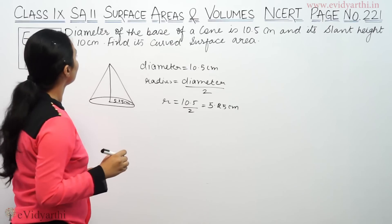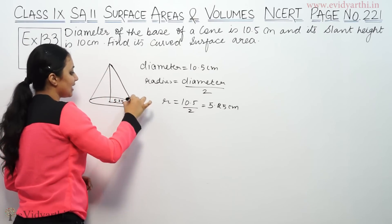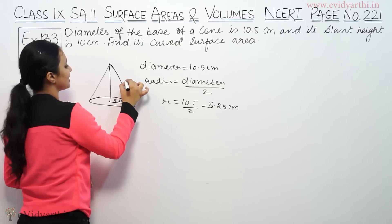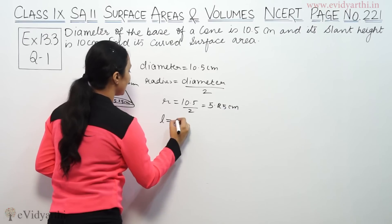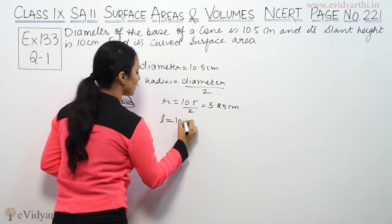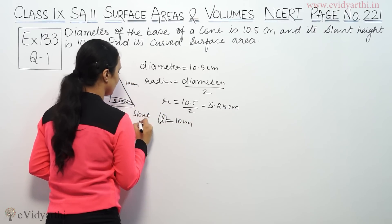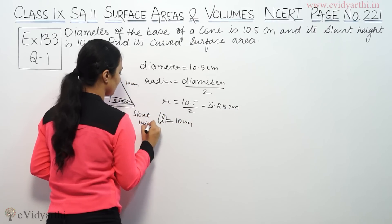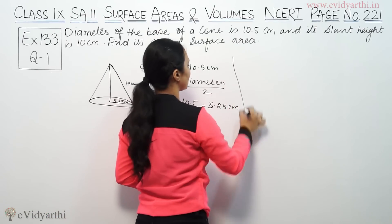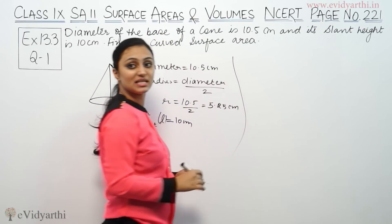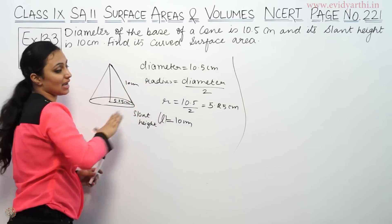We also have the slant height given. Slant height is 10 cm, and we denote slant height as L. So L equals 10 cm.